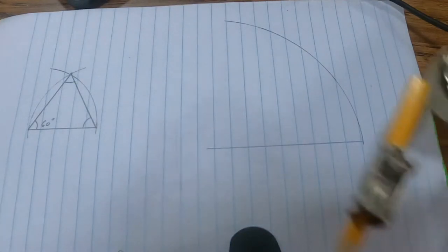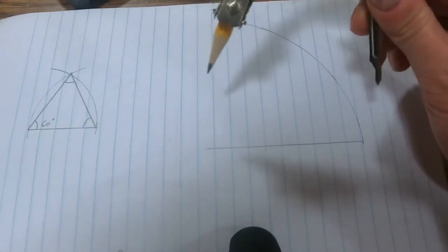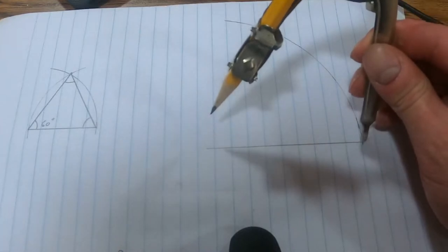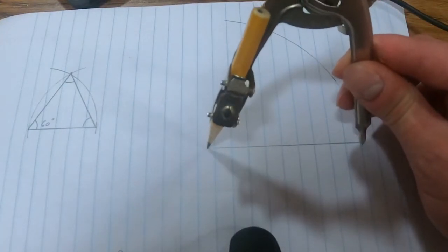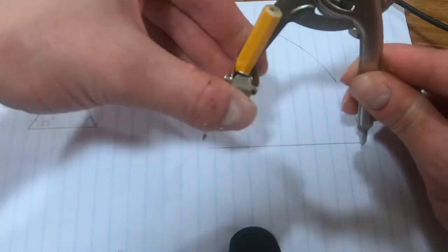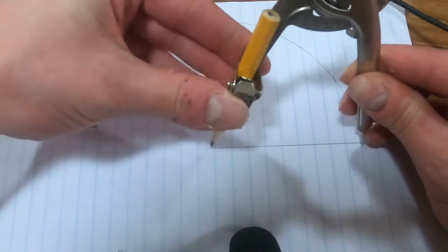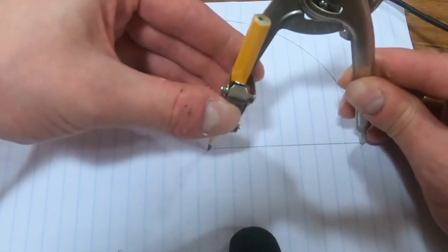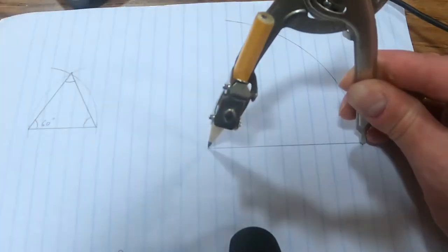I'm going to take my compass and switch so that now I'm over here. If you messed up your length on your compass, that's fine, just recreate it. Right, I can recreate it so that it's the exact same length as that side length and just copy it again.